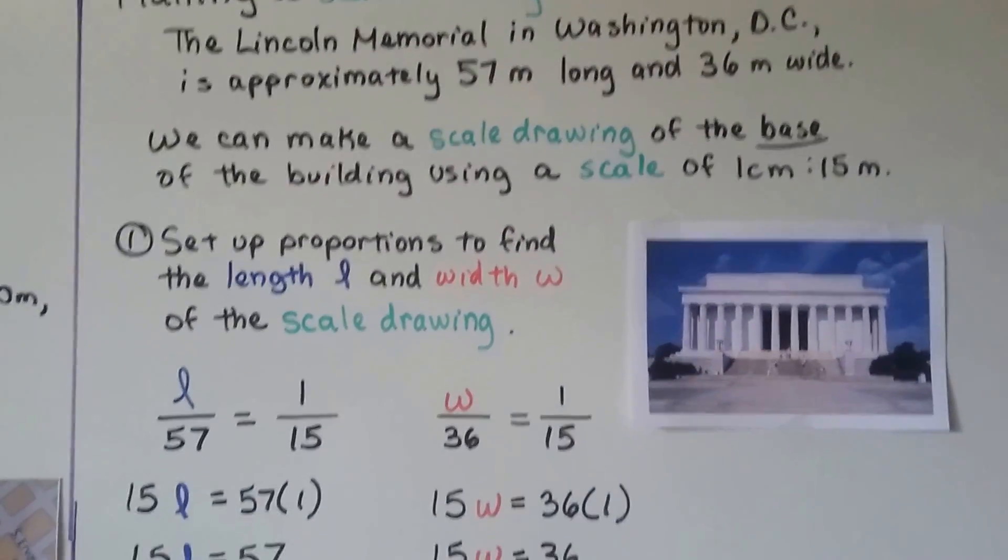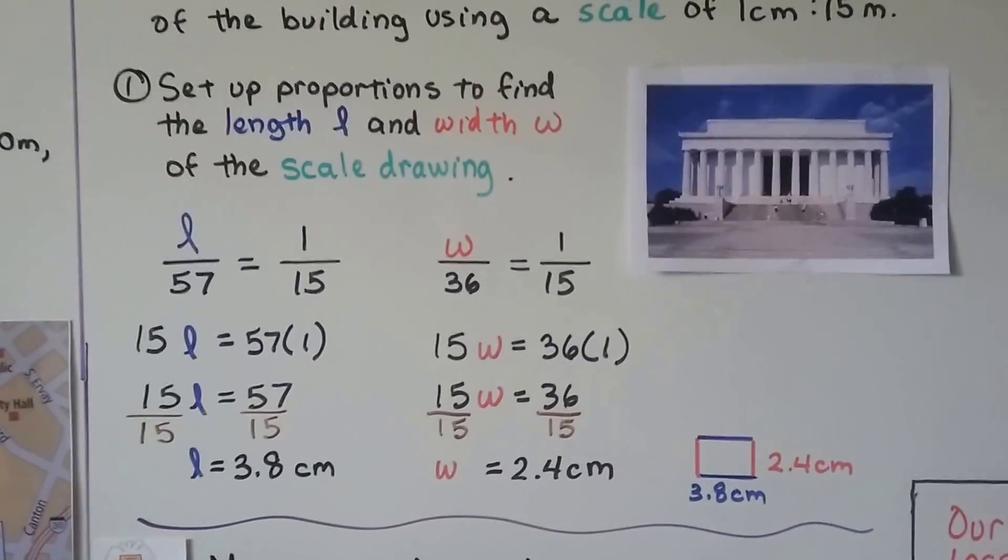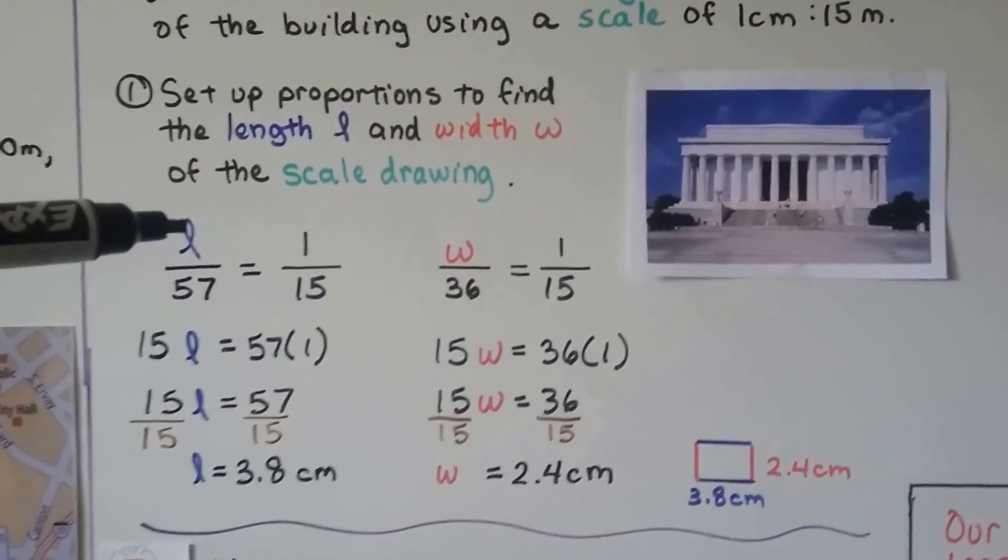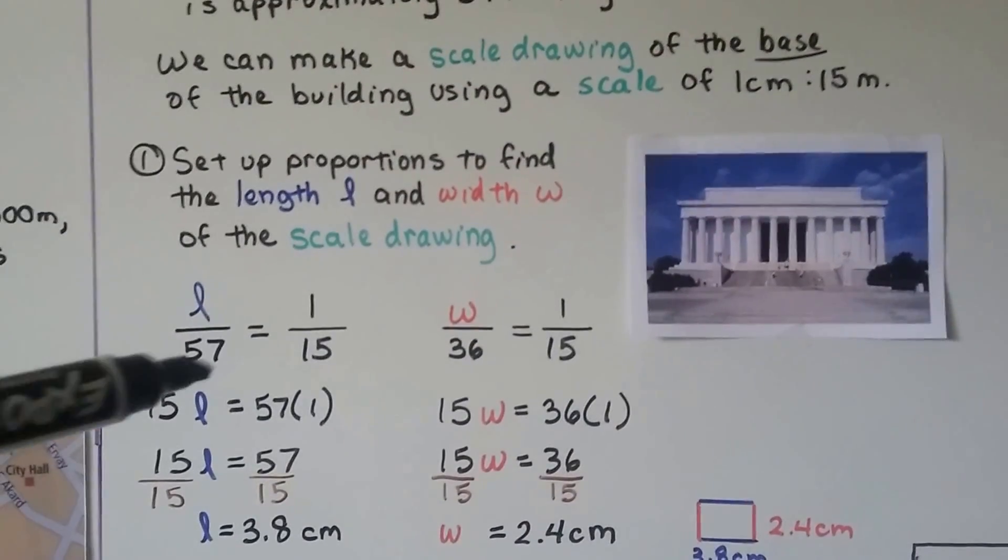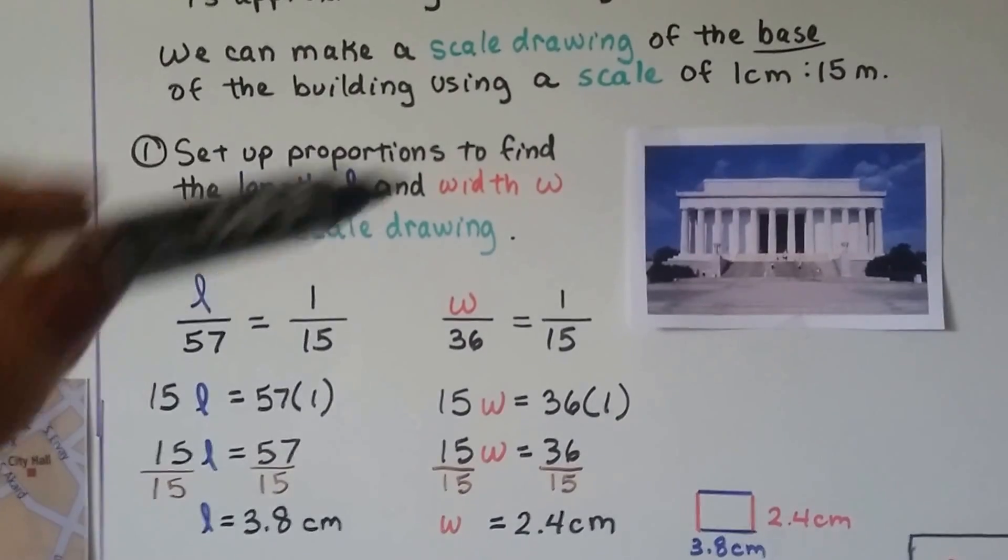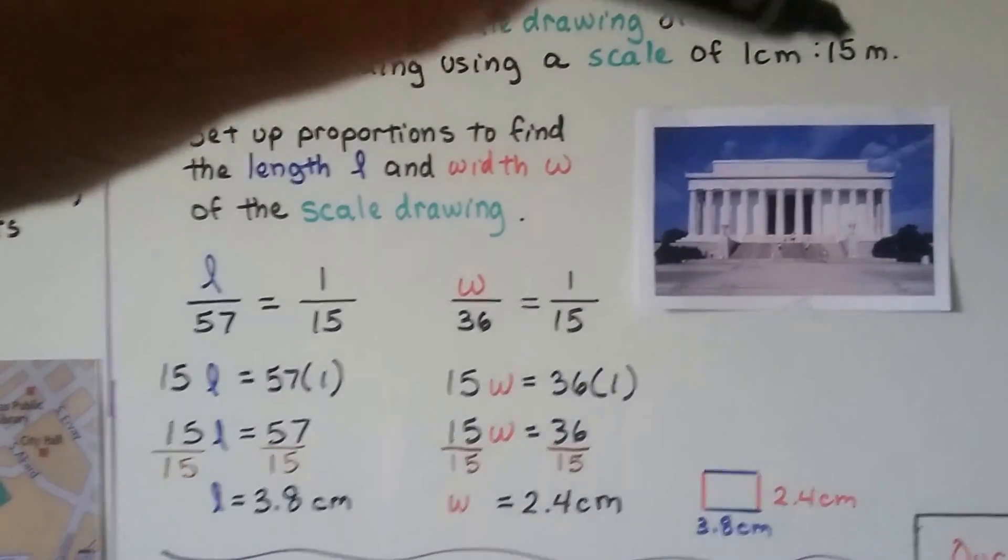We set up proportions to find the length L and width W of the scale drawing. So the length of the scale drawing L over the 57 meters that it actually is for its length is going to be over 1 for our scale drawing to 15 meters for our actual 1.